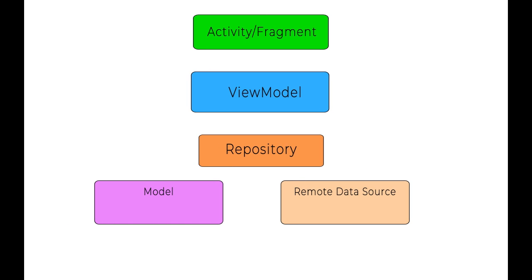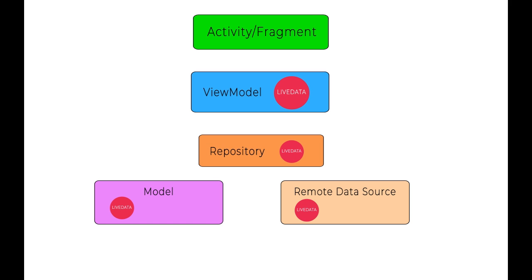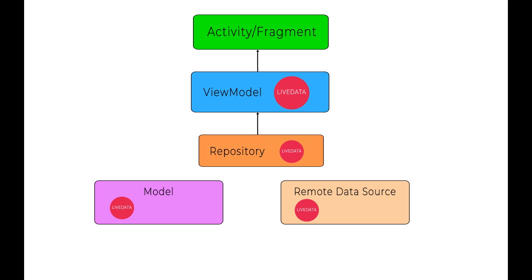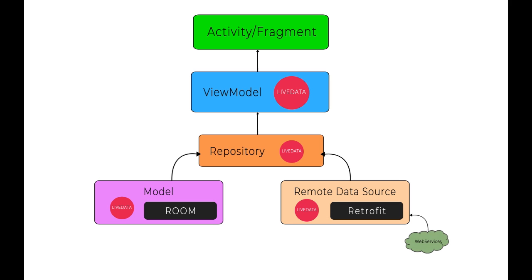Carrying on from the example with live data at the center of the universe, this is a better architecture model. The view model updates observers in the activity and gets its live data from the repository. The repository gets its live data from either the remote data source — the REST API — or the database cache in the case that the REST API is not functioning properly. It's like a train of live data getting fed into the activity.